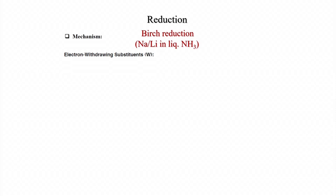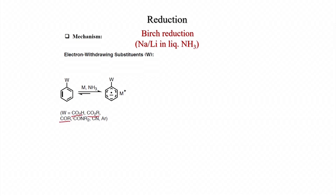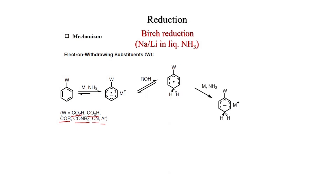With electron-withdrawing substituents such as carboxylic acid, ester, ketone (COR), amide, cyanide, or aryl groups, a radical anion is generated. The anion resides on the carbon connected to the electron-withdrawing group W, because it is stabilized by W. Para protonation occurs first, and the anion generated at the electron-withdrawing group carbon undergoes ipso protonation.